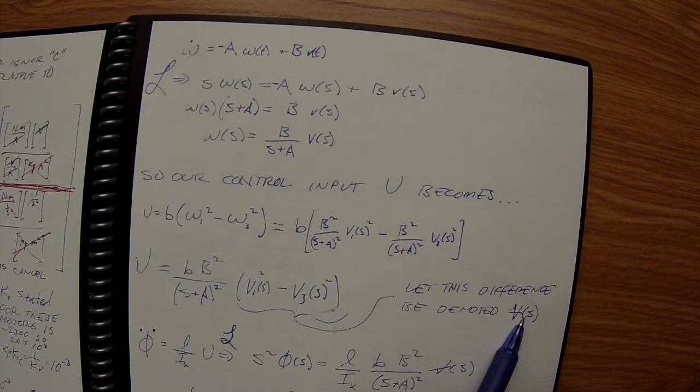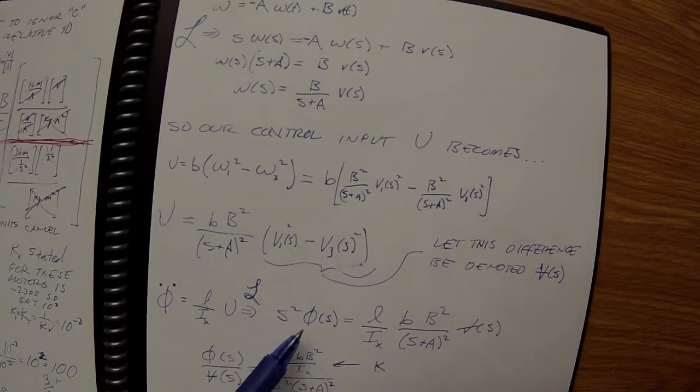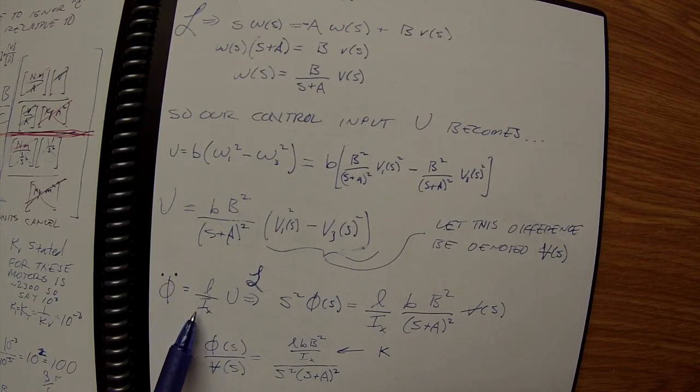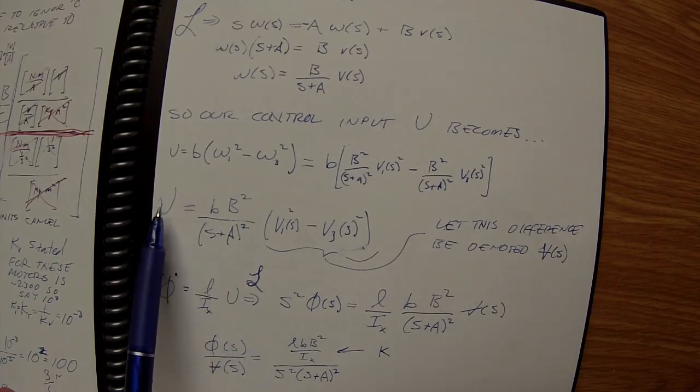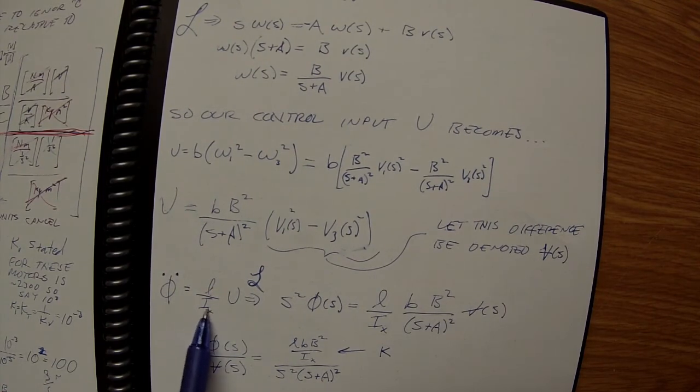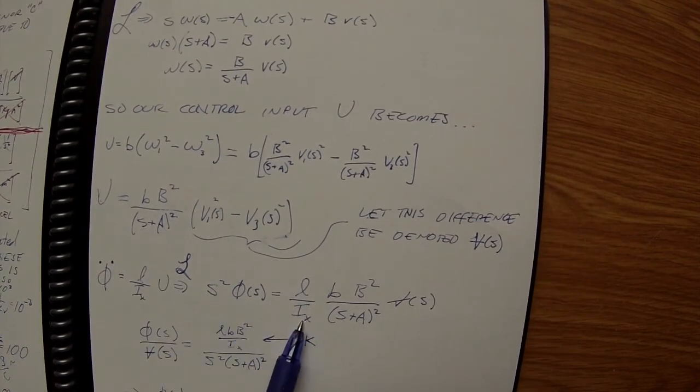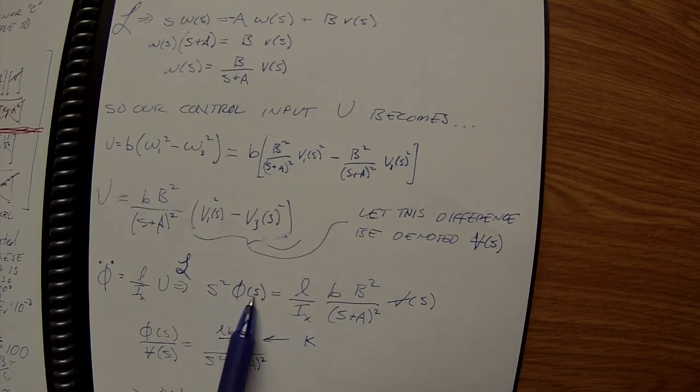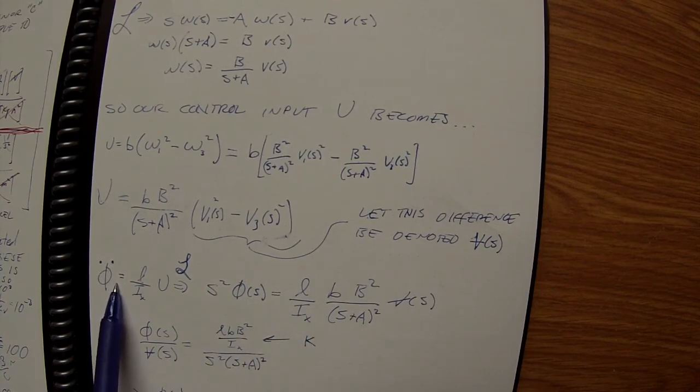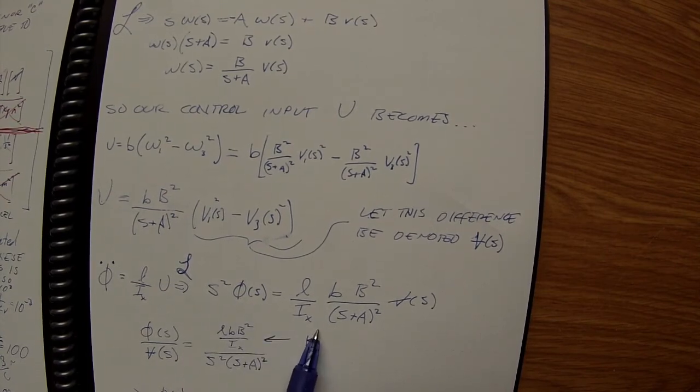When we go back and look at our model, theta double dot—that's our input, that's our big U—is L over the body moment of inertia times B for that axis times U. We just take the Laplace transform and we end up with this form here, because this is the second derivative, so we've got S squared phi of S.